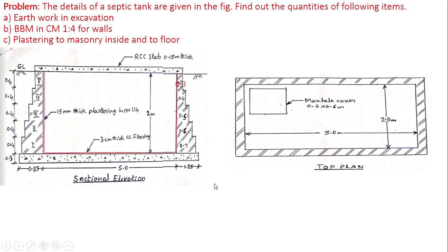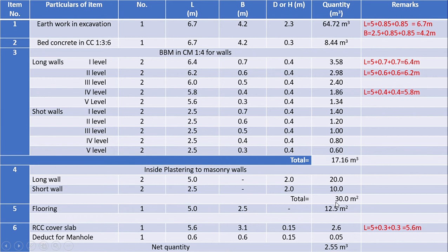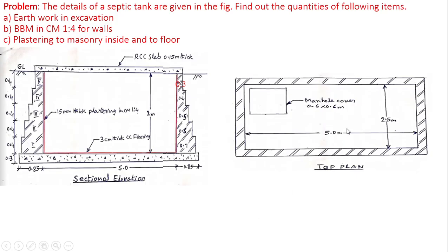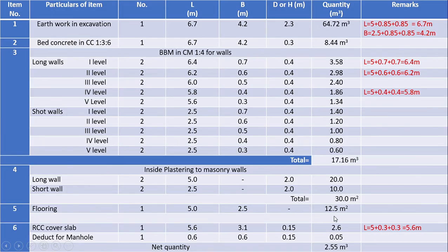Item 5: flooring. The thickness of flooring is given as 3 centimeters. The flooring is measured in meter square. Its length and breadth are obtained from the plan as 5 meters and 2.5 meters respectively, and the quantity of flooring is equal to 12.5 meter square. It's the product of length and breadth.